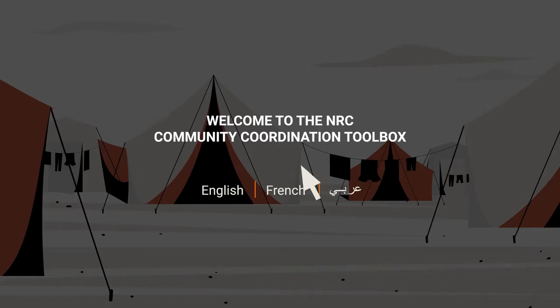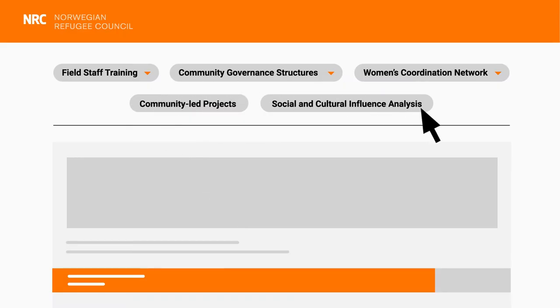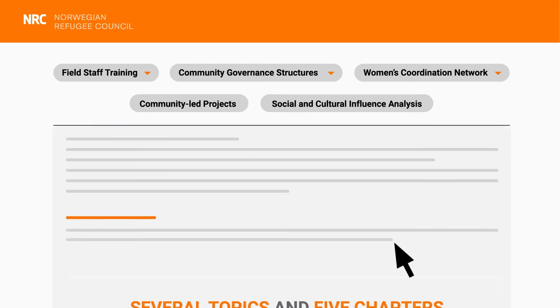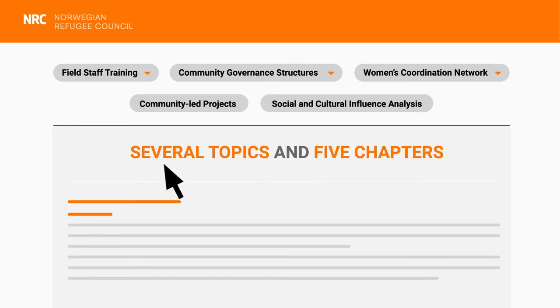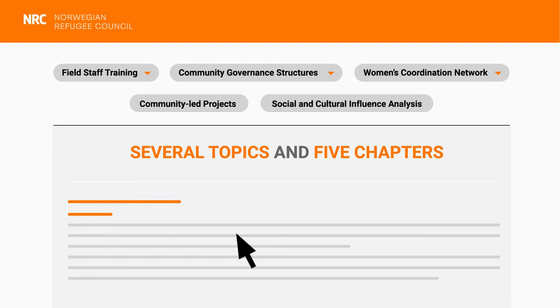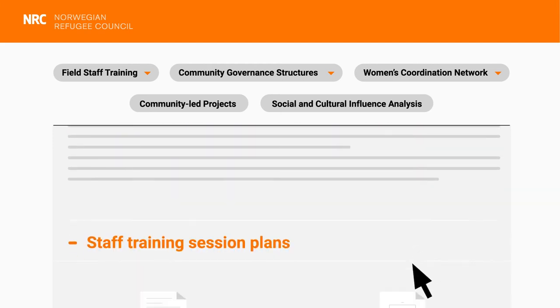To access the tools, all you have to do is visit the Toolbox website, choose your preferred language — English, French, Arabic — and search for the tools that best suit your context. You'll access tool sets in several topics divided into five chapters, and find explanations and guidance on how to use each set of tools.